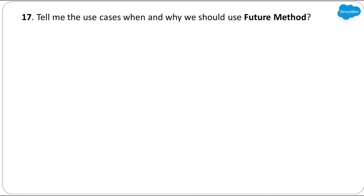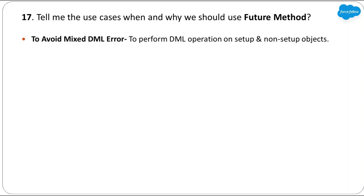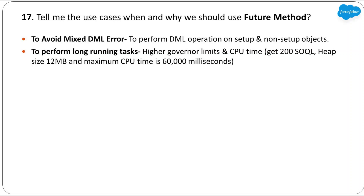Next: tell me the use cases for when and why we should use future methods. The first use case, already discussed, is to avoid Mixed DML errors when performing DML on both setup and non-setup objects. The second use case is to perform long-running tasks. Future methods execute in a different thread, so if we have a requirement like a long-running calculation whose output is not needed immediately, we can use a future method — the calculation runs in a different thread, the current thread is freed quickly, and the user gets a response instantly.